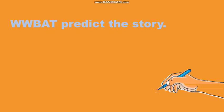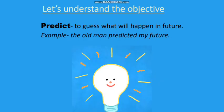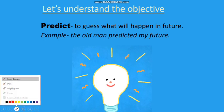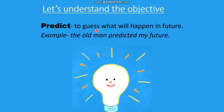Let's quickly read our objective today. We will be able to predict the story. Write it down in your notebook and I shall explain the meaning of the objective. The one new word we are finding in this objective is 'predict.' What is predicting? To guess what will happen in the future — thinking and saying what will happen next in the story. For example, the old man predicted my future.